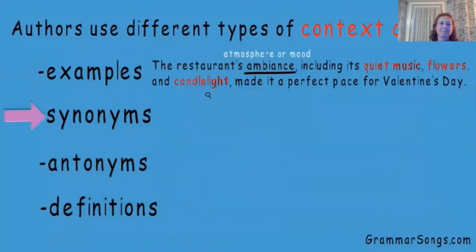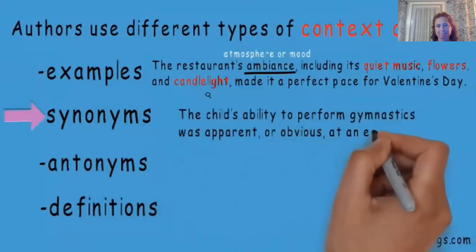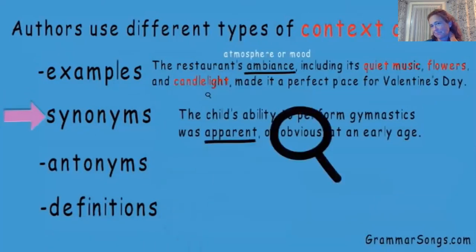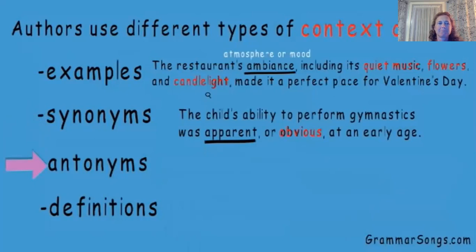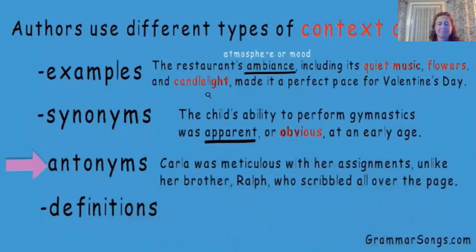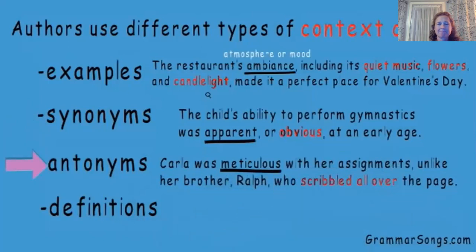Sometimes authors use synonyms or words that mean almost the same thing. The child's ability to perform gymnastics was apparent, or obvious, at an early age. If you are unfamiliar with the word apparent, the synonym clue obvious makes the sentence easy to understand. Sometimes authors will use antonyms to help the reader grasp an unfamiliar word by stating the opposite. Carla was meticulous with her assignments, unlike her brother Ralph, who scribbled all over the page. If you don't know what meticulous means, the antonym phrase scribbled all over would let you know that Carla was neat and careful with her assignments.